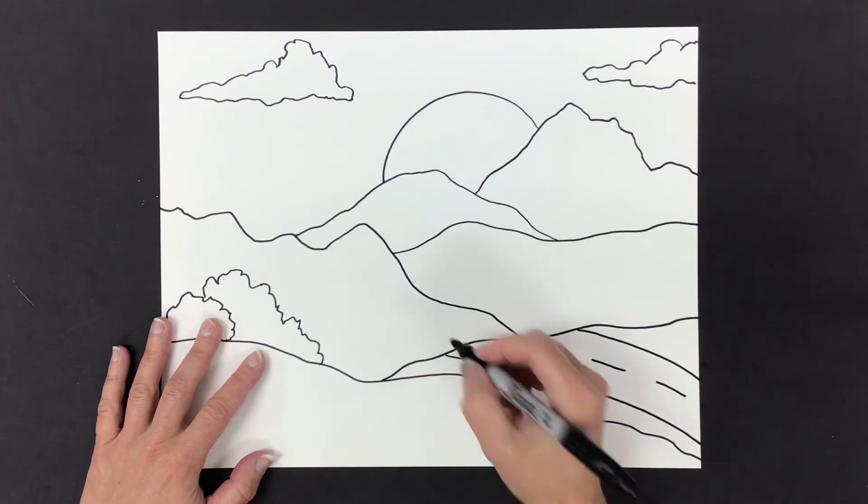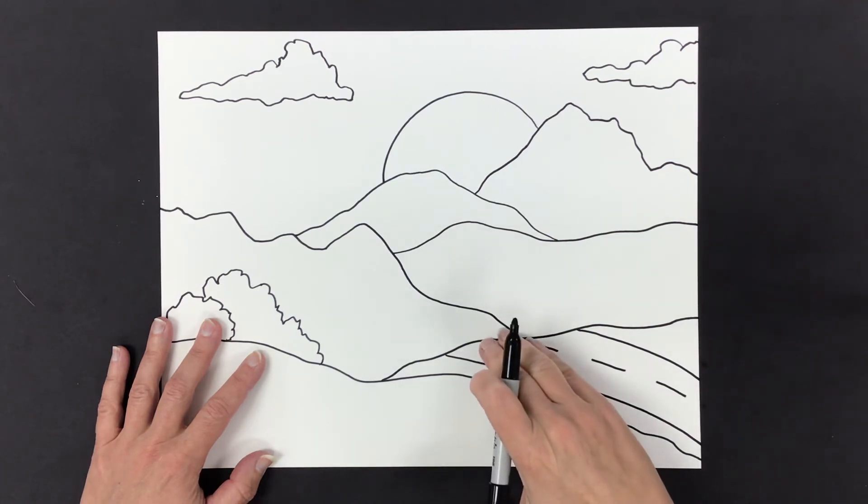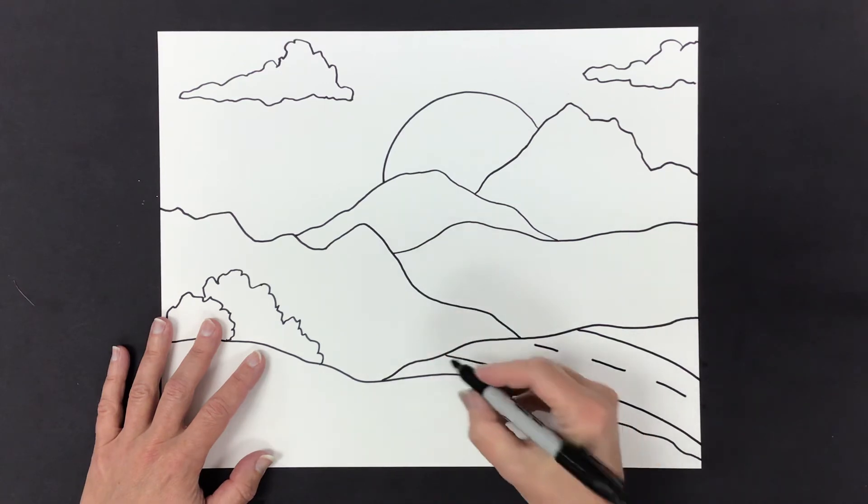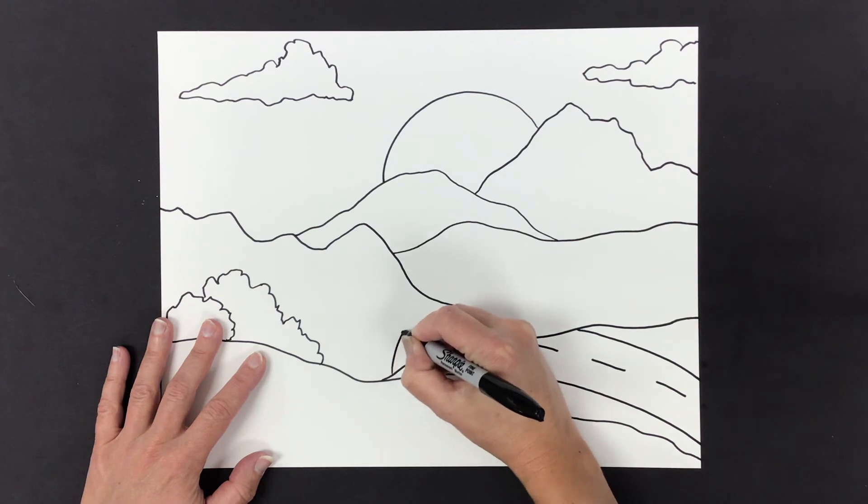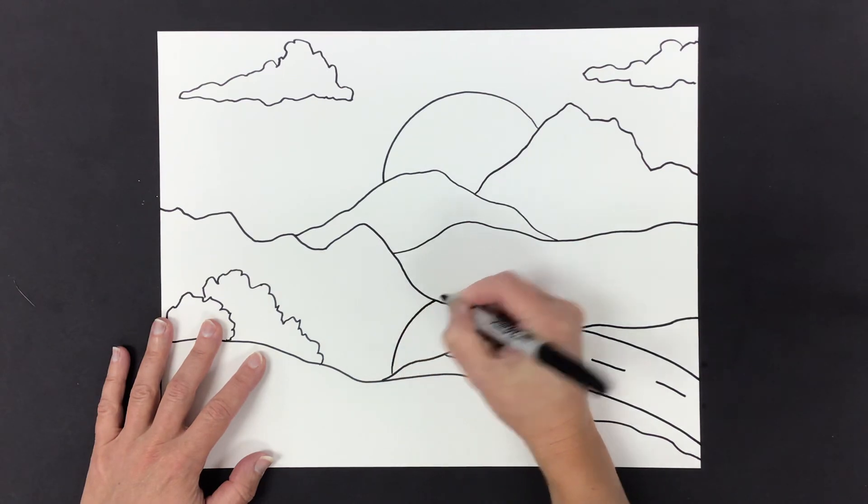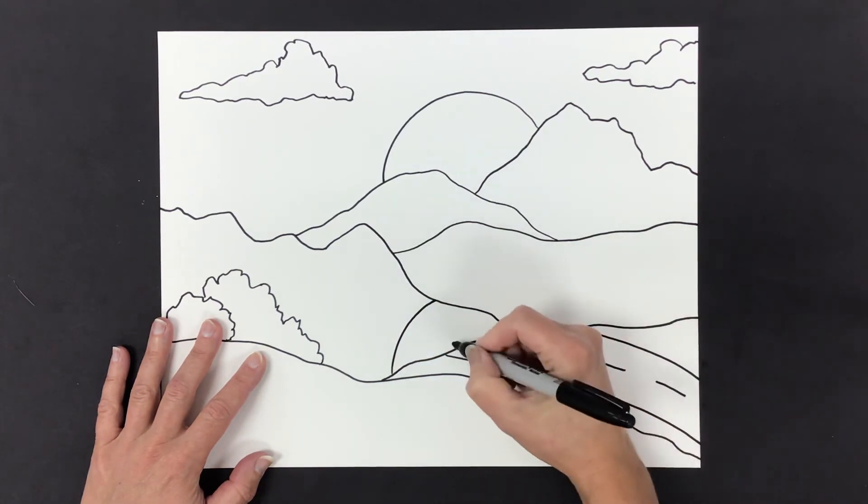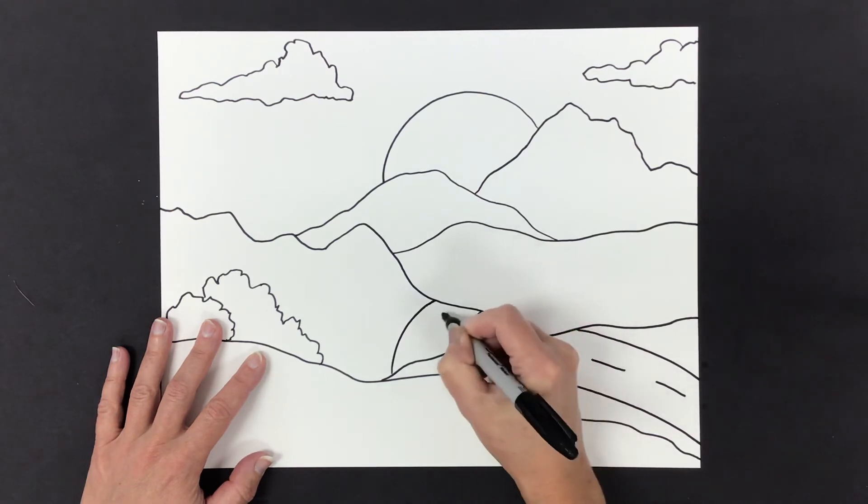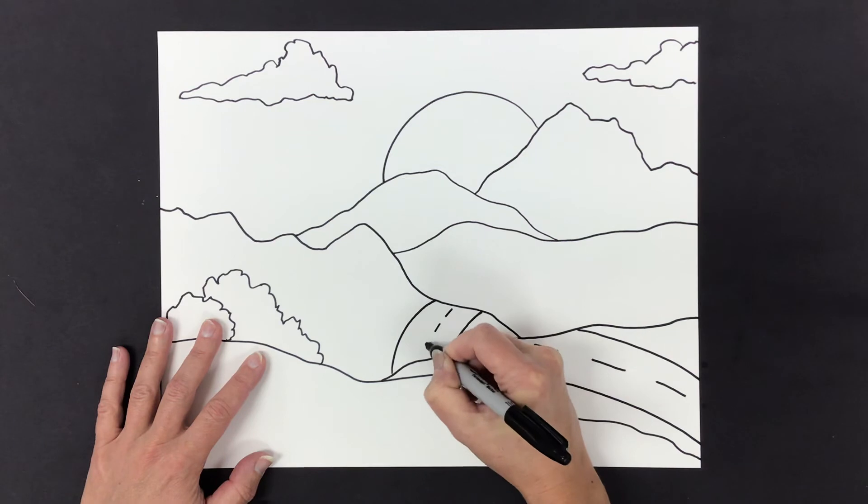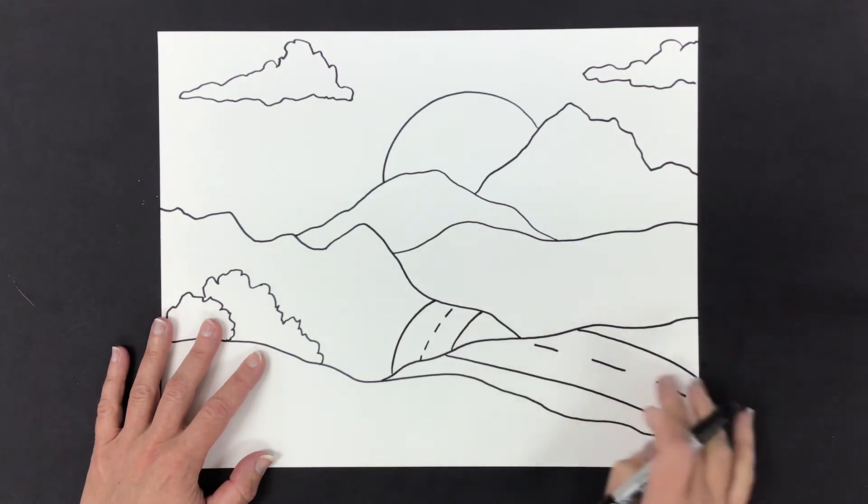But when the road got over here and went over this hill, we want to show how far away this hill is from this one. So then over here I make the road again. But I don't make it as thick as I did right here. It's going to be thinner. And these lines get smaller than they were right here.